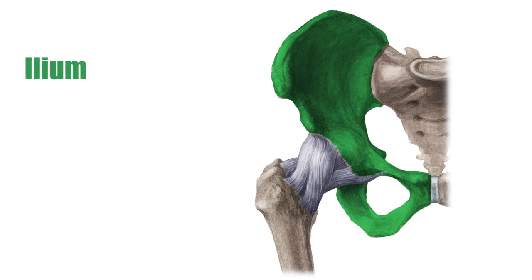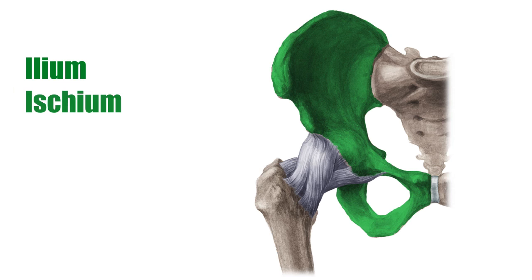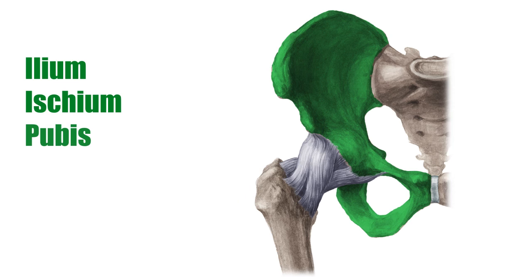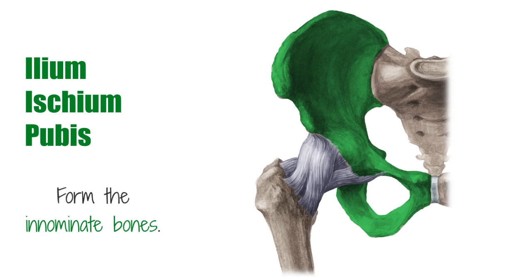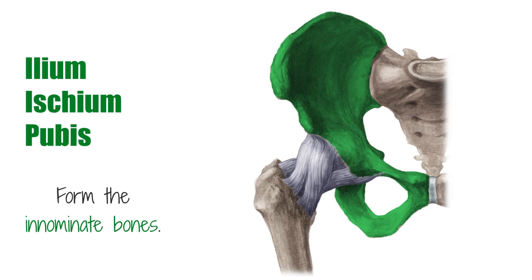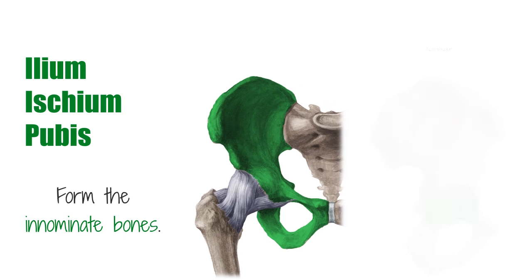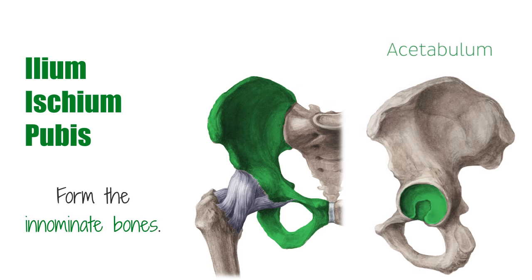The ilium, the ischium, and the pubis, which are the bones that form the hip bone and are seen here collectively highlighted in green, fuse together at puberty to form the innominate bones, and are joined by the cartilage found in the acetabulum.